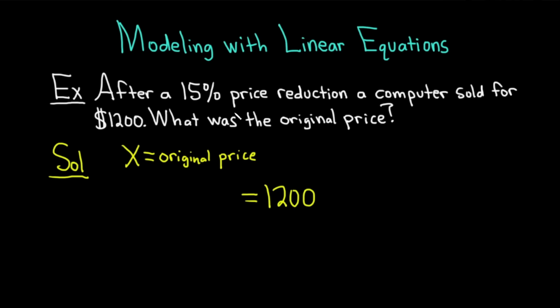But we also know that it sold at a 15% price reduction. That basically means it sold for 15% less than the original price. That's the original price minus 15% of the original price. Of in mathematics means multiply, so 0.15 times x.